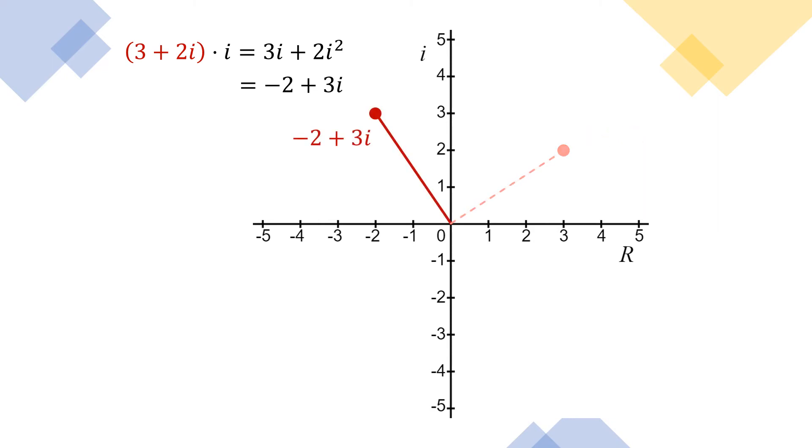It's right there. And notice the old number is kind of in a lighter red with a dashed line. And it looks like the relationship between the old and the new is a 90 degree angle. And we've gone counterclockwise.